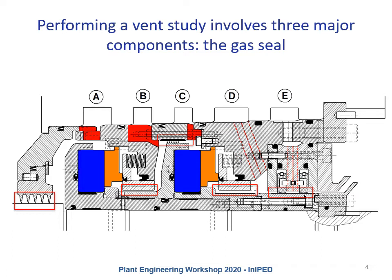The first restriction worth discussing is the labyrinth seals. There are two labyrinths generally found within dry gas seals: an intermediate labyrinth and a process labyrinth. These labyrinth seals do offer a restriction, but it's typically not incredibly significant. A labyrinth seal will not cause a significant pressure drop, but it can help redirect flow in a vent study, which I'll discuss more later.